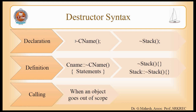The syntax for declaring a destructor is: ~CNAME(); with no parameters. The example for this syntax is ~stack(). To define a destructor outside the class, the syntax is: CNAME::~CNAME(). Examples show one destructor defined within the class and another defined outside the class for stack class objects. You do not have to call the destructor explicitly — when an object goes out of scope, the destructor is automatically called.